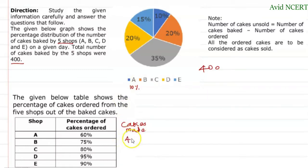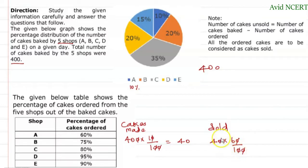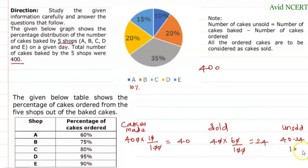For shop A: 400 × 10/100 = 40 cakes made. Out of these 40 cakes, 60% were ordered (sold): 40 × 60/100 = 24 cakes sold. Therefore, the unsold cakes = 40 − 24 = 16. So 16 cakes were unsold for shop A.